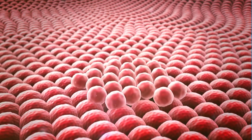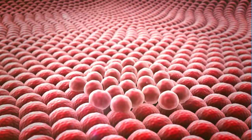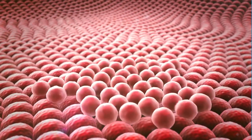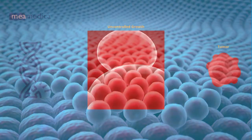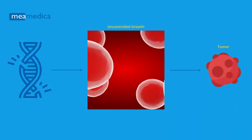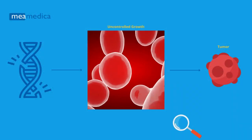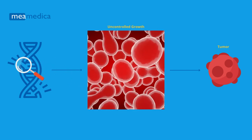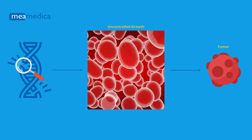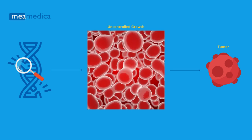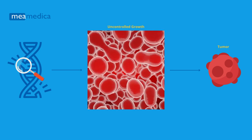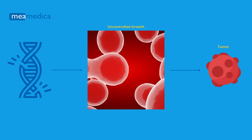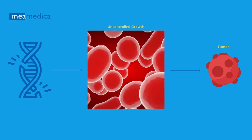So our body has mechanisms that ensure that the cell does not divide too quickly. The problem is when these mechanisms don't work. In this DNA test, we analyze the presence of variants in genes that, when mutated, disrupt these mechanisms that control cell division, and there is a greater risk of cells starting to grow uncontrollably and leading to the appearance of tumors and certain types of cancer.